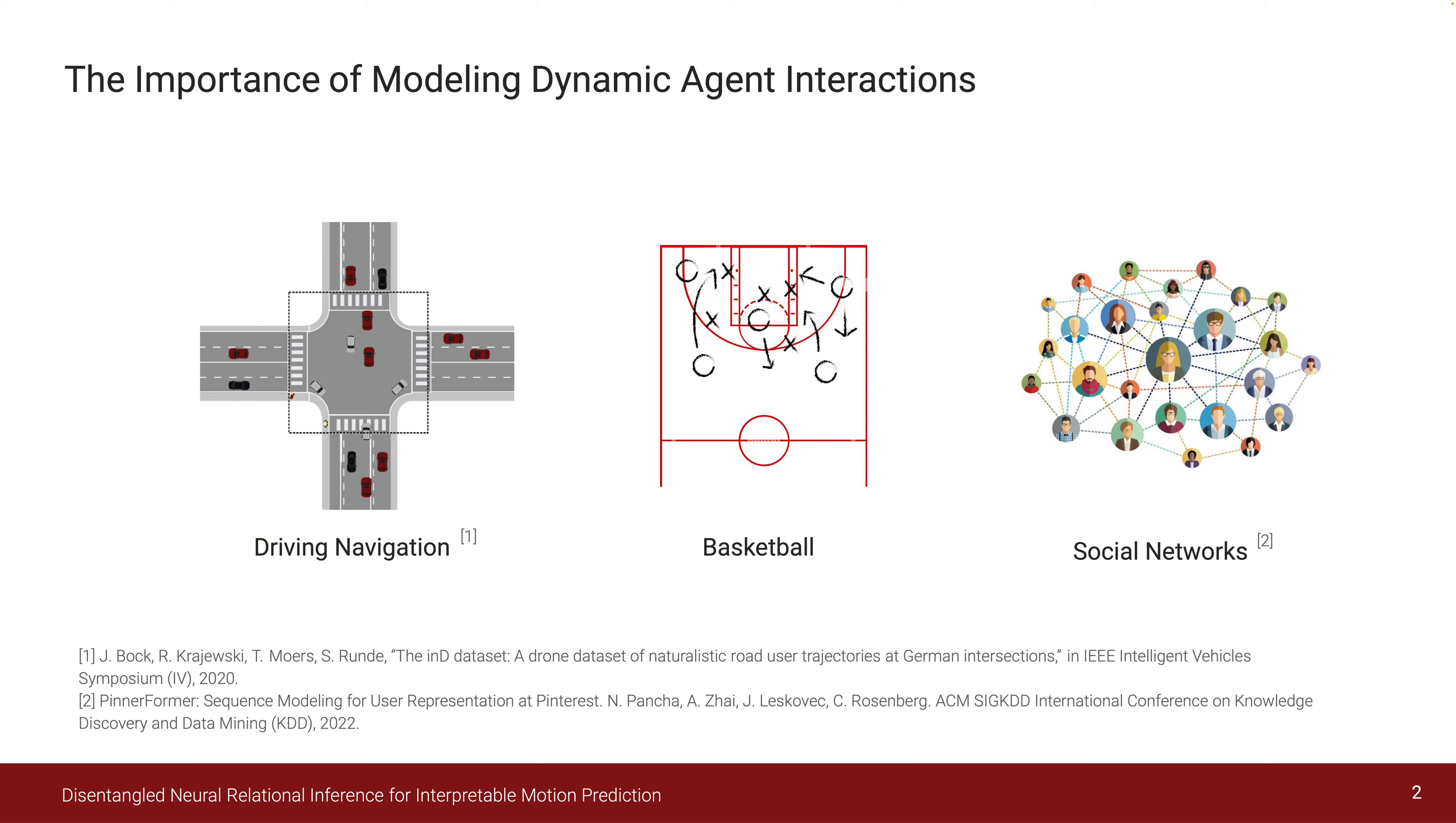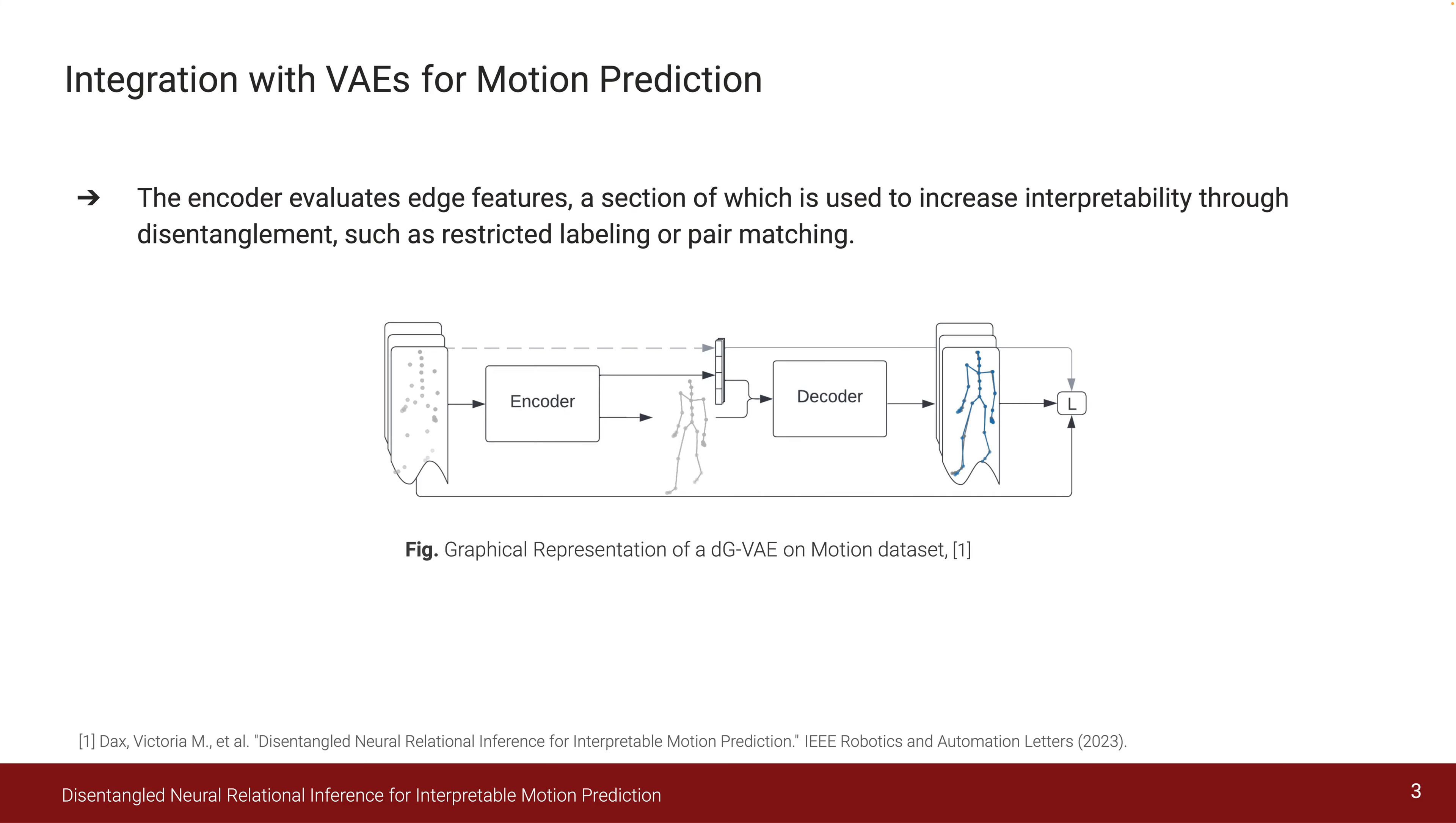Anticipating and planning for dynamic behaviors of agents in shared spaces requires a deep understanding of the potential interactions. We developed the dGVAE model to address these interaction patterns and predict future trajectories with higher accuracy, interpretability, and generalizability.